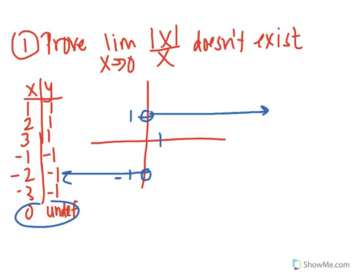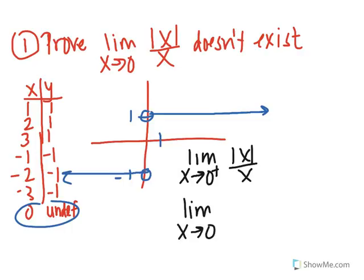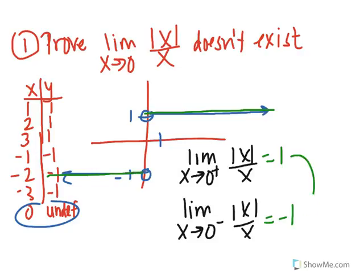To prove it doesn't exist, compare the limit as x approaches 0 from the right — approaching from the positives, the limit is 1 — to the limit as x approaches 0 from the left — approaching from the negatives, the limit is negative 1. Because these are not the same, therefore the limit does not exist.